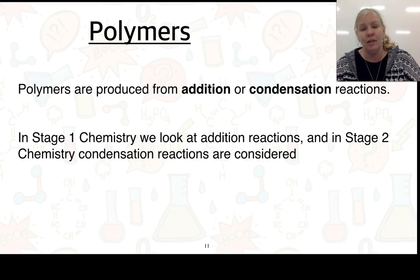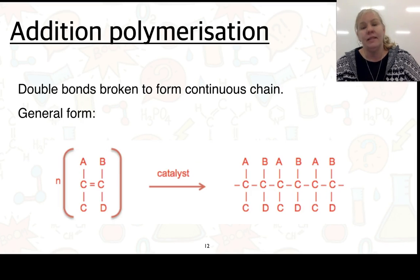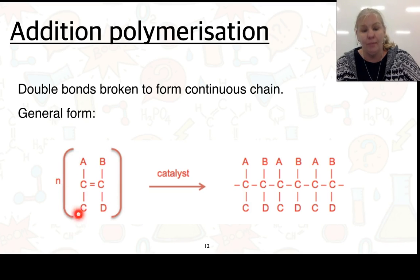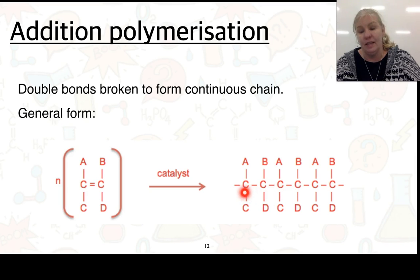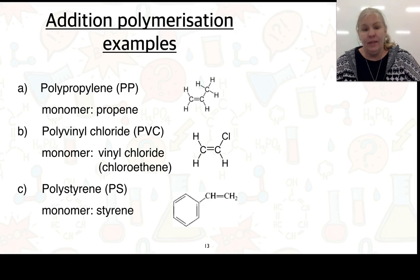Here's our information about addition polymerization: double bonds are broken to form continuous chains. Here's our monomer, and through a reaction with a catalyst, the double bond breaks and the monomers add to each other. Here we have three examples and I'm going to go through each of those on the following slides.